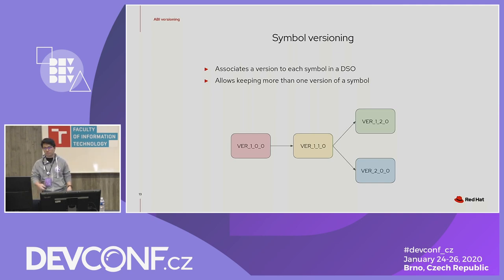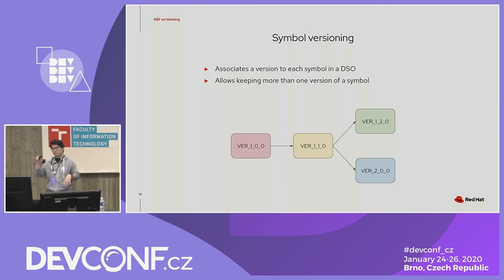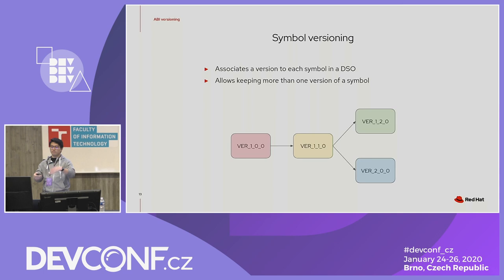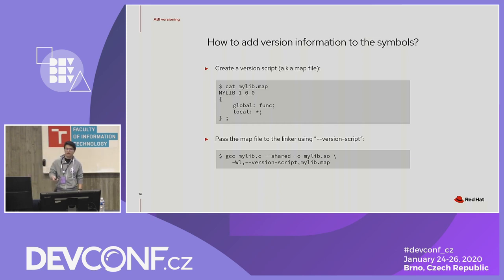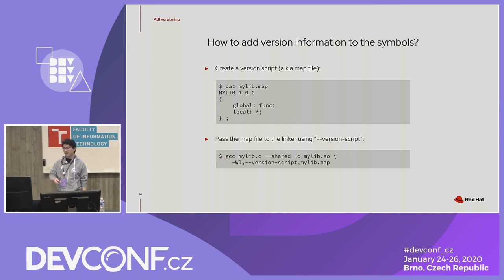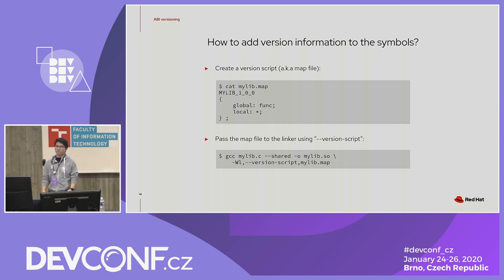The idea is to create version nodes where you can put the list of symbols introduced in that version. You put this in the binary so the symbols will be associated with version information, and you create a hierarchy. If one version node has a predecessor node, it means it supports all the symbols available in the version before, keeping compatibility. To add version information to your symbols, you create a version script — also known as a map file — declare the version node with the list of symbols, and pass the map file to the linker using --version-script. This is only valid for the GNU linker.